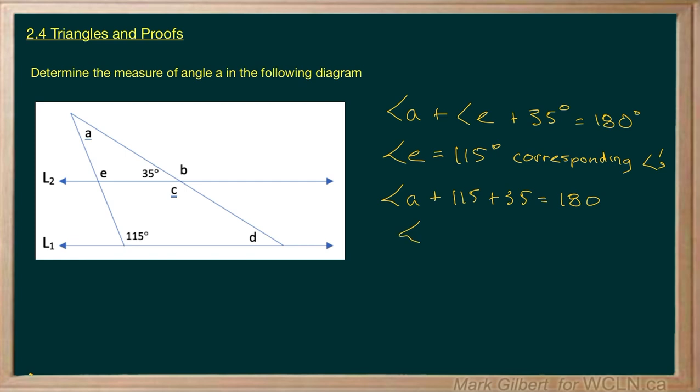That gives us angle A plus 150 equals 180. We can subtract 150 from both sides to get angle A equal to 30.